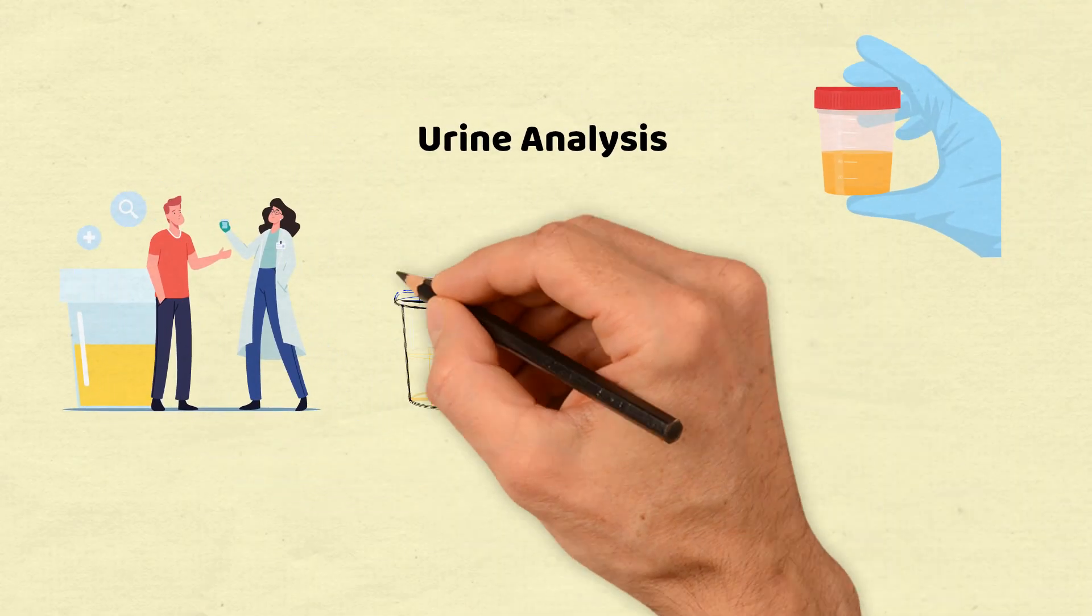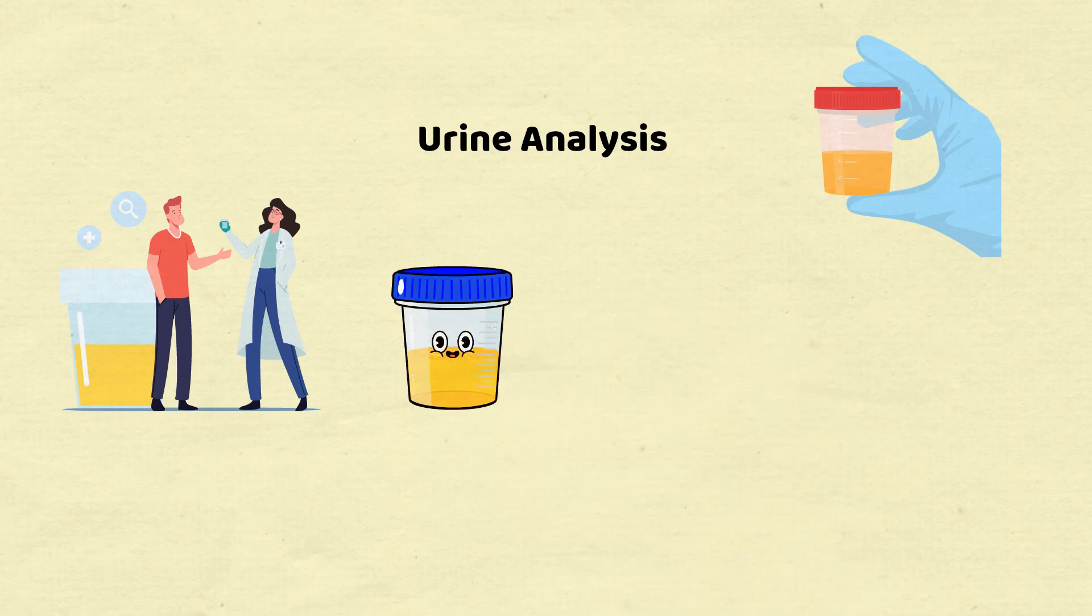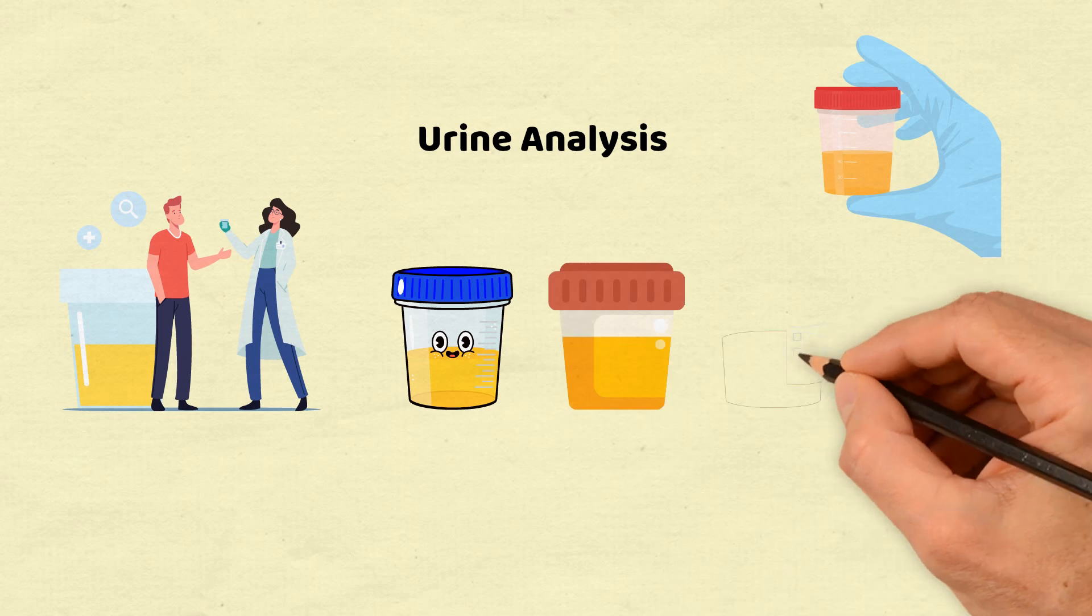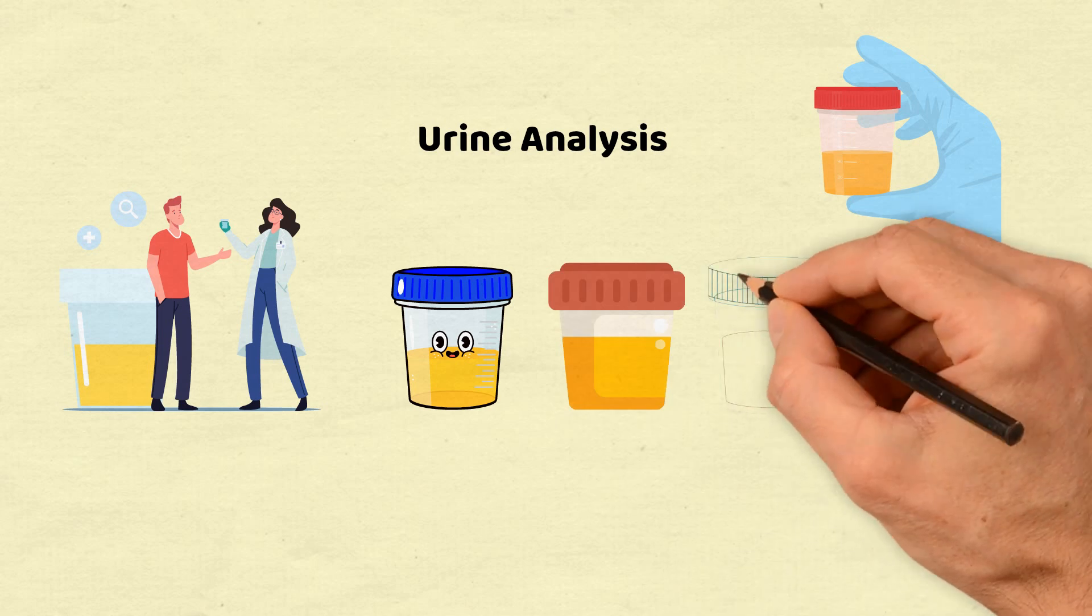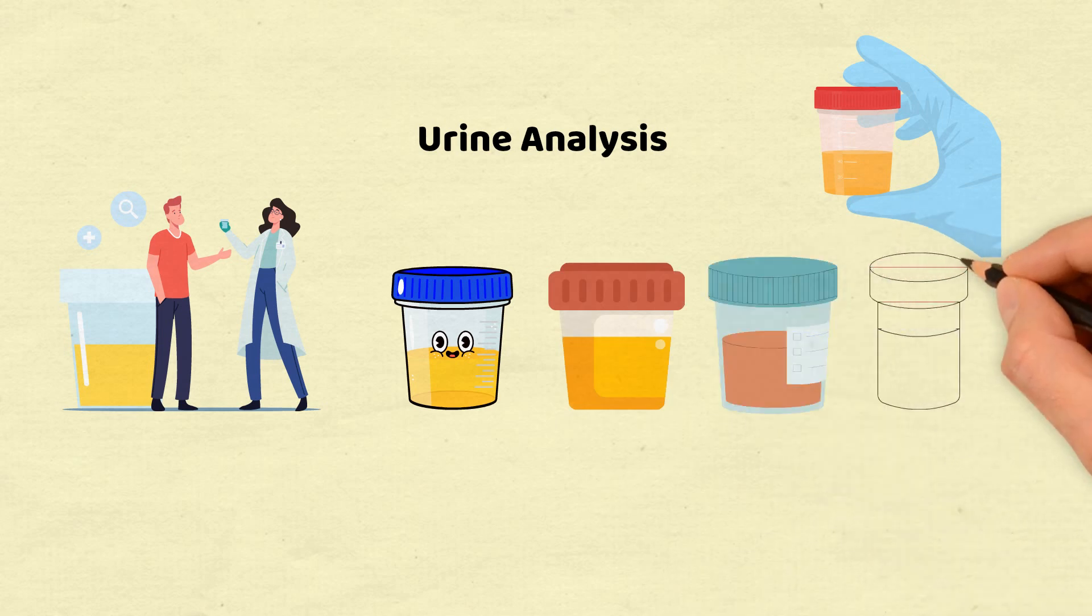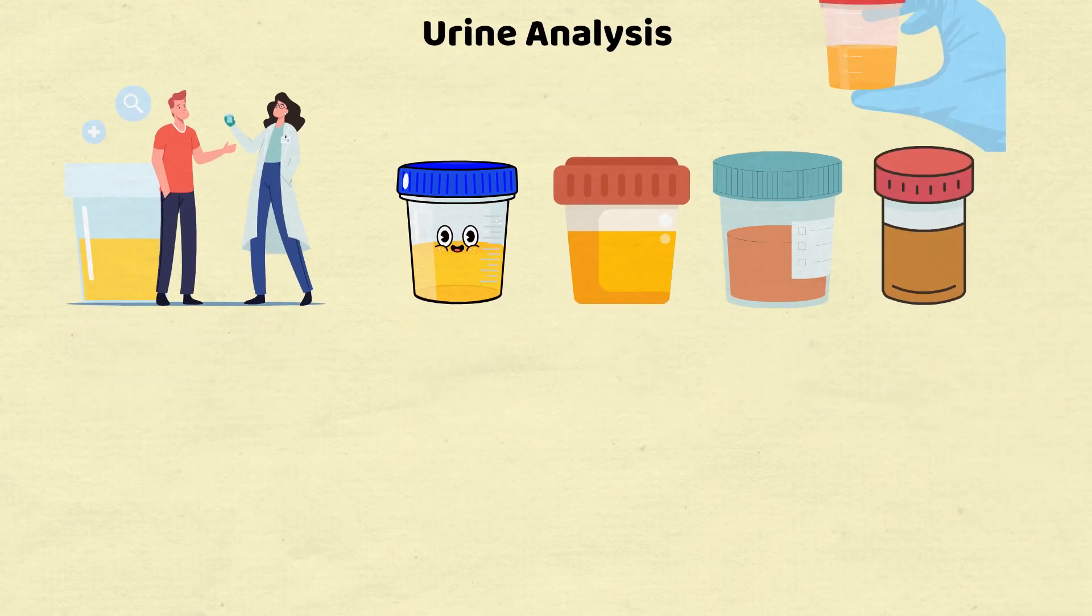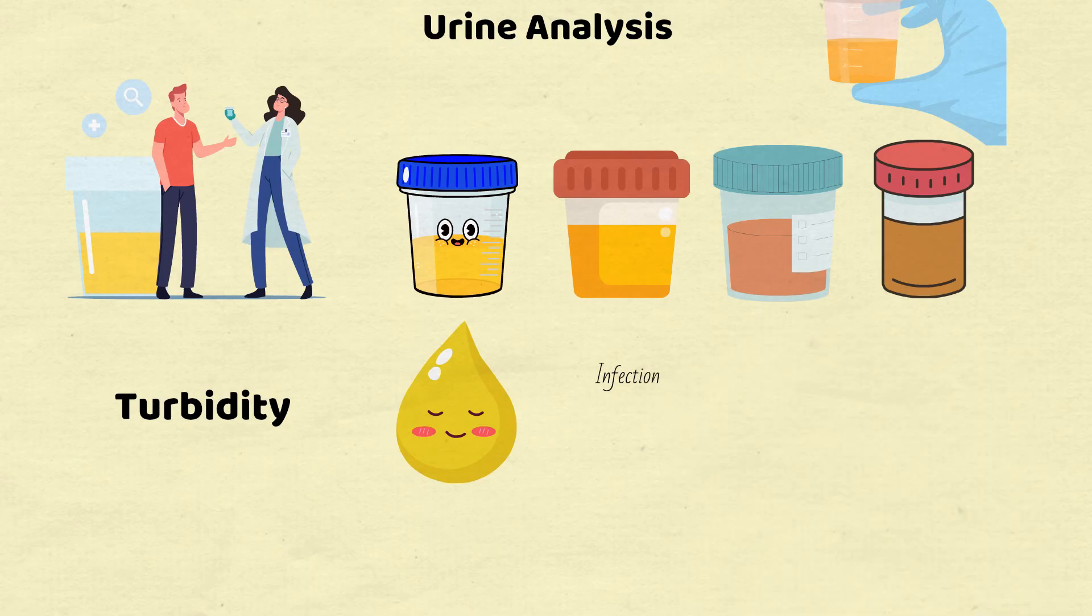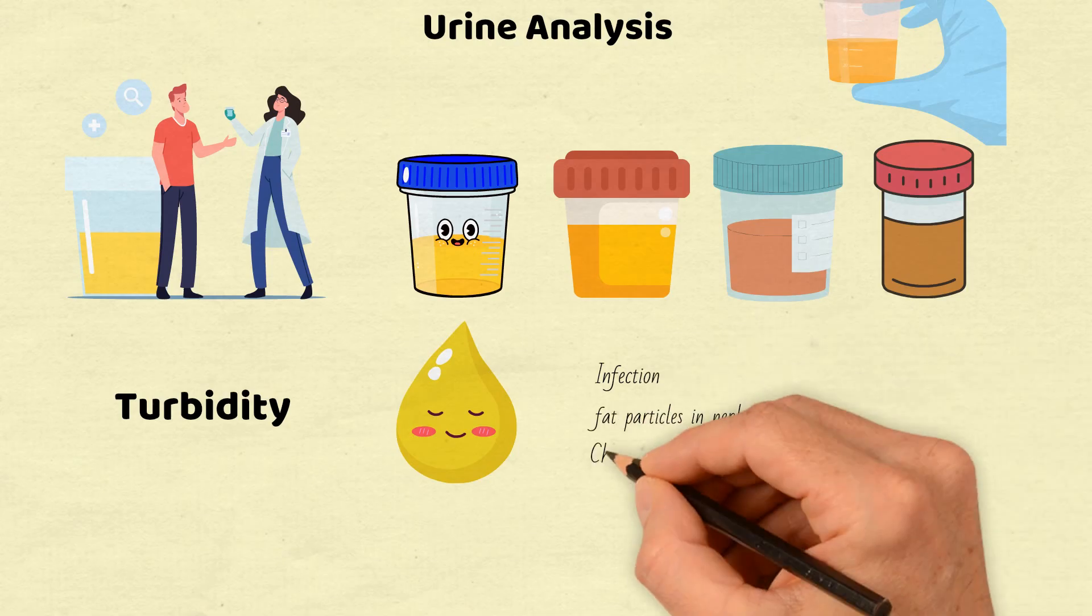Color: normal urine is pale straw colored. Darker urine may indicate higher concentration or the presence of pigments, while unusual colors like pink, red, or brown could point to hemoglobin or myoglobin. Turbidity: cloudy urine might suggest an infection, fat particles in nephrotic syndrome, or in rare cases, chyluria.